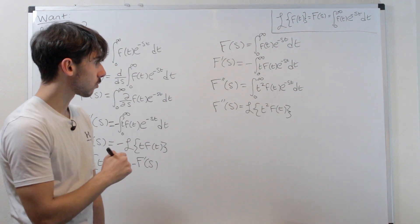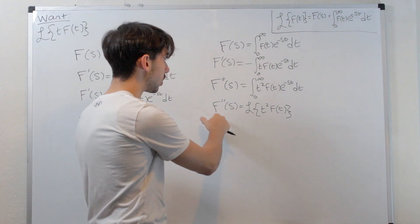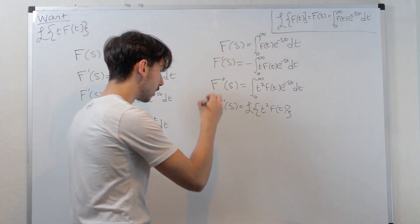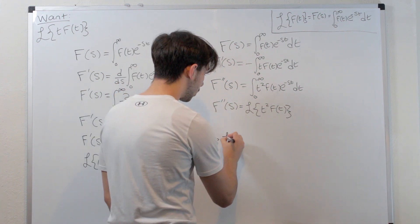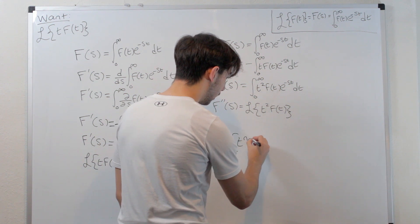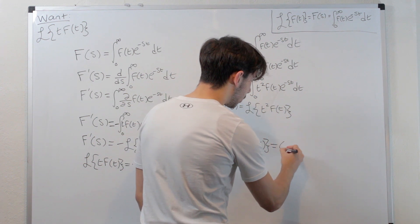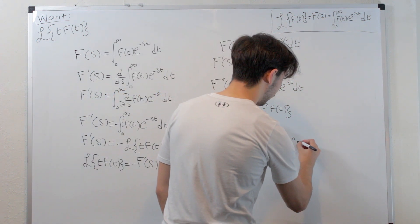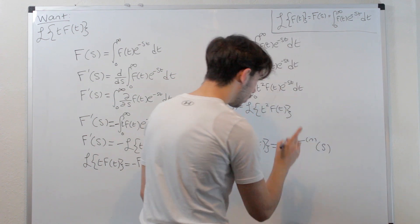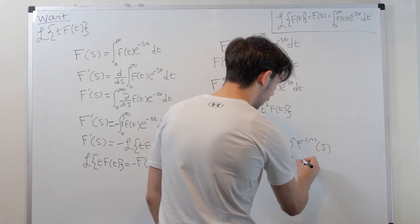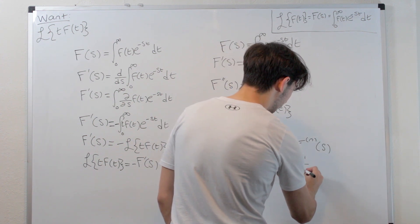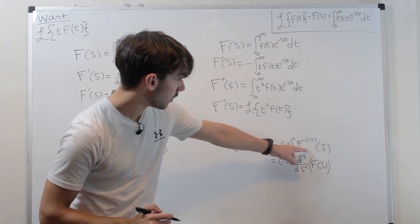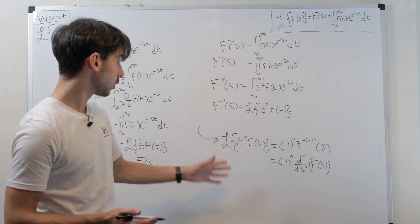So we can see that the Laplace transform of t squared·f(t) is just the second derivative of F of s, and there's no negative sign. And what you will find — and you can prove it by induction if you want to — is that the Laplace transform of t to the n times f(t) is just negative 1 to the n times the nth derivative of F of s, written as F superscript n of s. Some people like to write this as negative 1 to the n times d^n over ds^n of capital F of s. These are the same thing — just different notation.